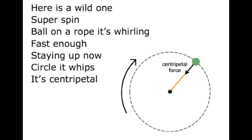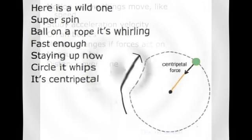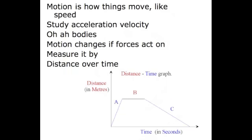Here's a wild one, super spin. Ball on a rope, it's whirling. Fast enough, staying up now. Circle it whips, it's centripetal.